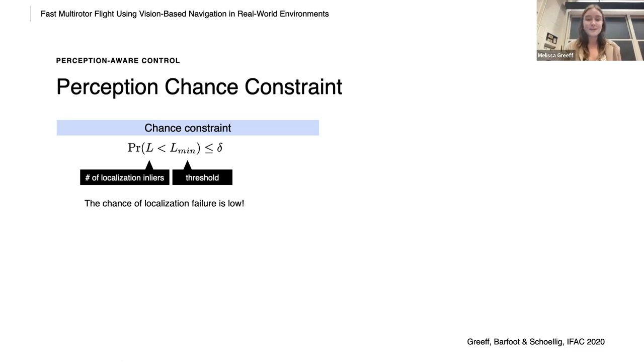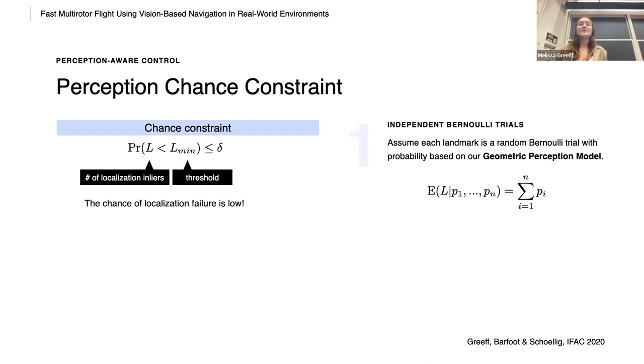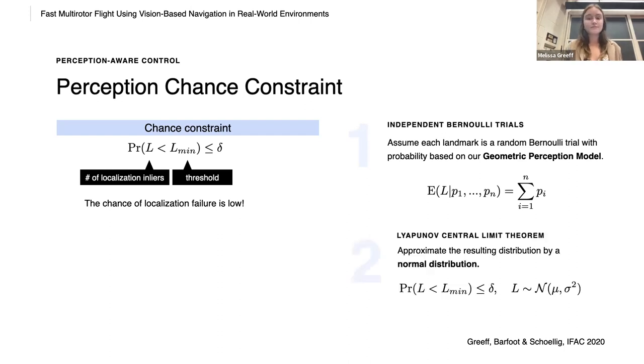So to convert this to a constraint that we can actually use in our controller, we make two additional assumptions. Firstly, we assume that each landmark is an independent random Bernoulli trial with probability based on our geometric perception model. So the expected number of landmarks is then simply the sum of these probabilities. Secondly, we assume that the resulting distribution, we approximate the resulting distribution by a normal distribution. And we can do this by using Lyapunov central limit theorem and because we are considering around five to six hundred landmarks at each teach vertex.